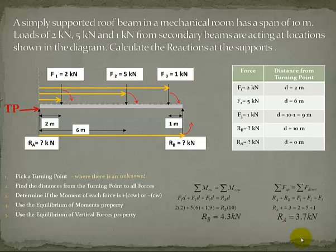So something to really pay attention to, the very first step of this process, is you have to pick a turning point. And always remember, where there is an unknown. If you pick it at a known, you're going to wind up getting equations with two variables in it, which you won't be able to solve.